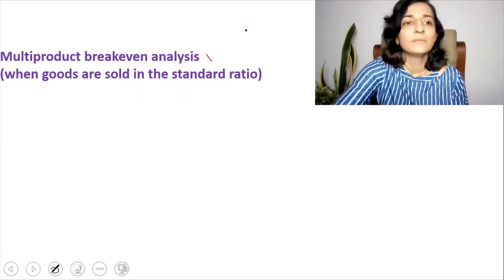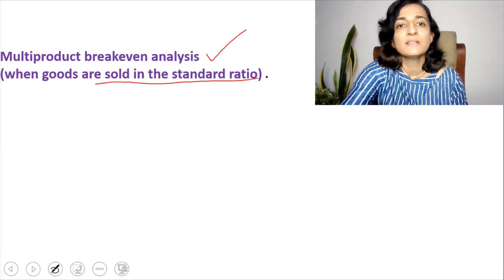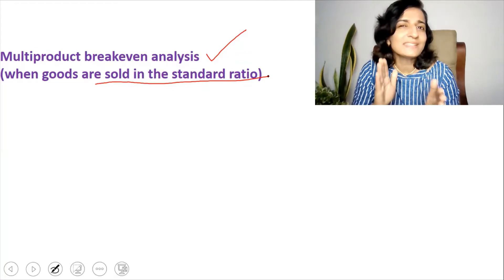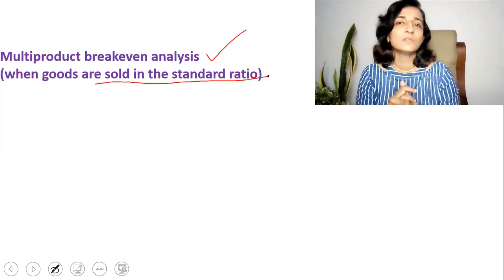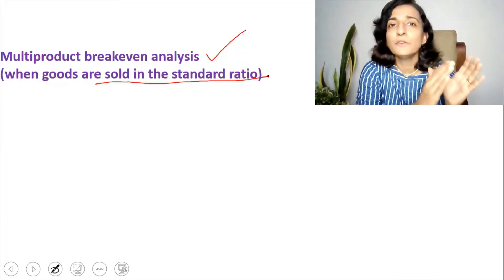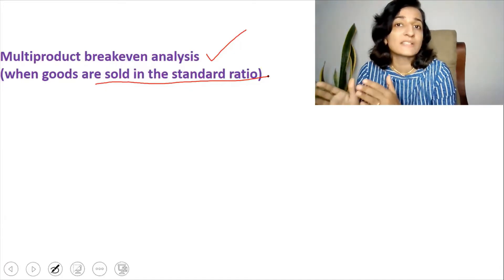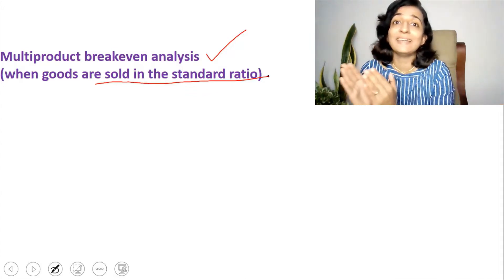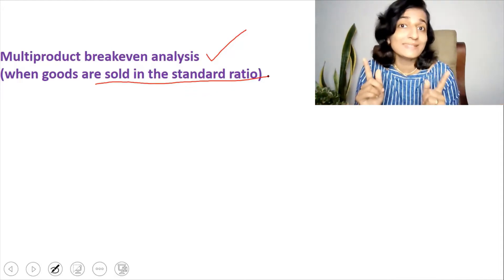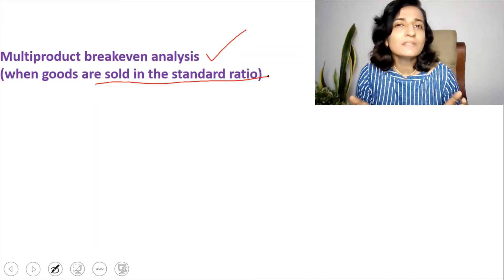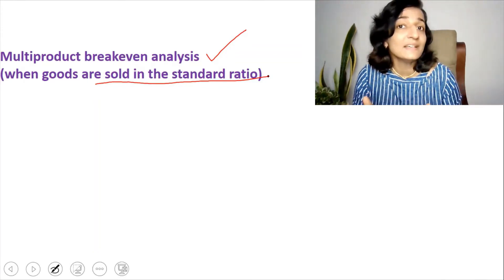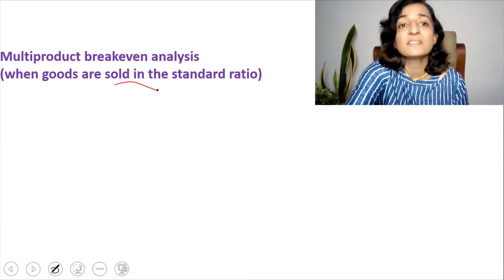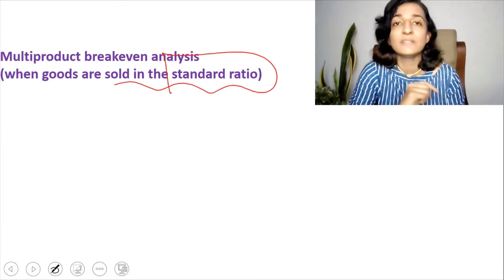We'll start with multi-product break-even analysis when goods are sold in a standard ratio. The standard ratio simply means there is a fixed ratio between the two products — for example, selling two footballs for every one basketball, a ratio of 2:1. Or selling three footballs for every two basketballs, a ratio of 3:2. This ratio is based on your past performance and current trends.